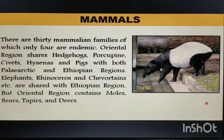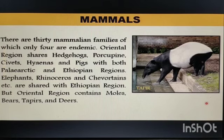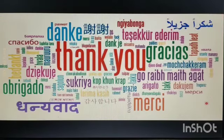Among mammals, there are 30 mammalian families of which only four are endemic. The Oriental Region shares hedgehog, porcupine, civets, hyenas, and pigs with both the Palaearctic and Ethiopian Regions. Elephants, rhinoceros, and chevrotains are shared with the Ethiopian Region. The Oriental Region also contains moles, bears, tapirs, and deer.